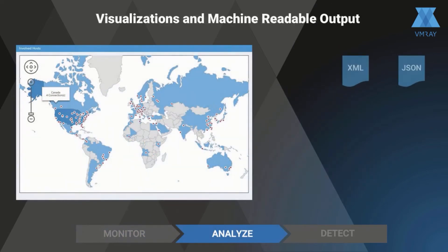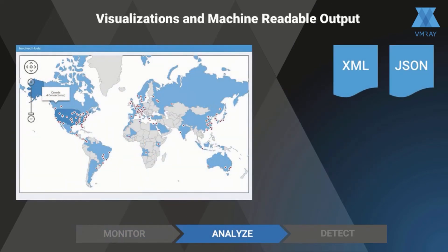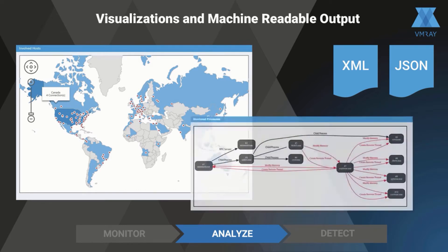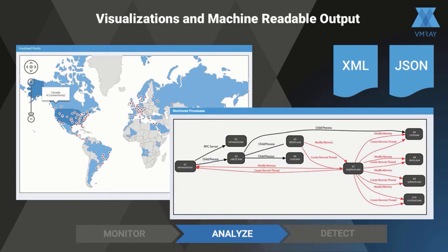VMRay Analyzer provides user-friendly visualizations of malware behavior as well as machine-readable output for scalable automated processing. Analysts doing manual investigations can see at a glance the process graph of the malware execution and the network traffic.